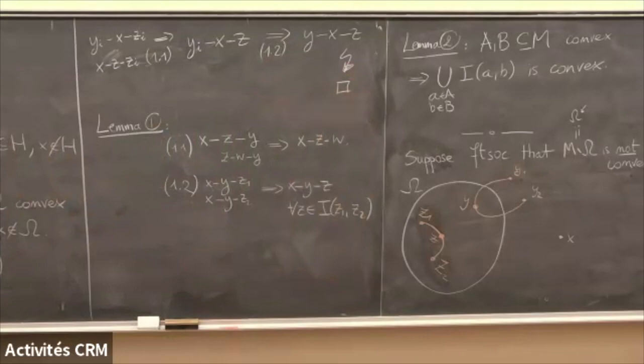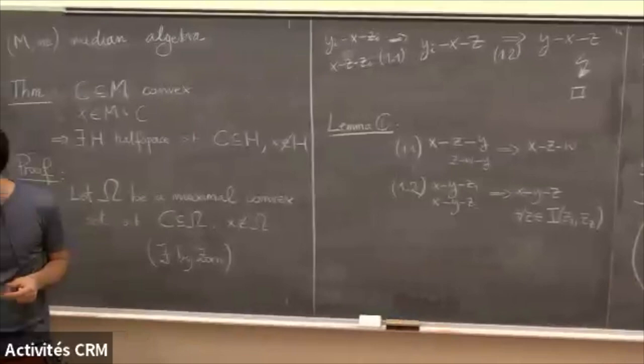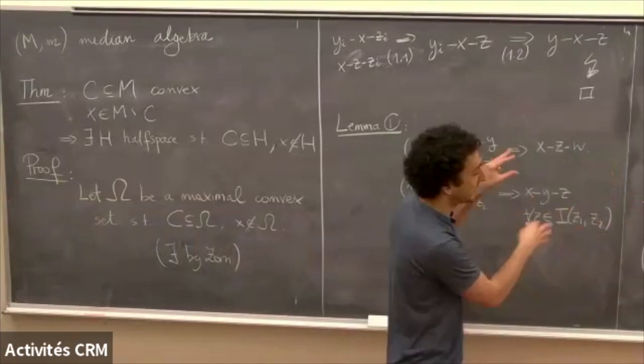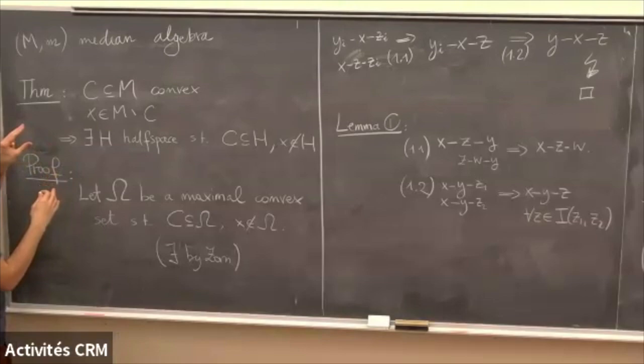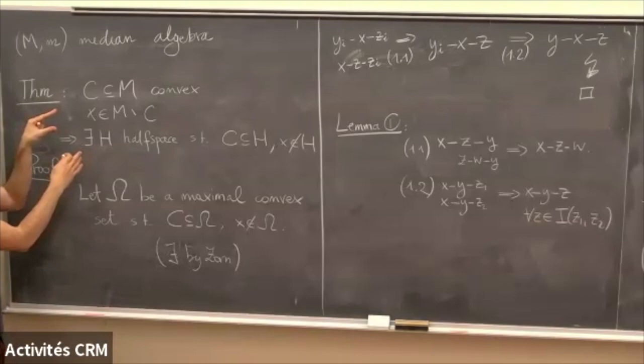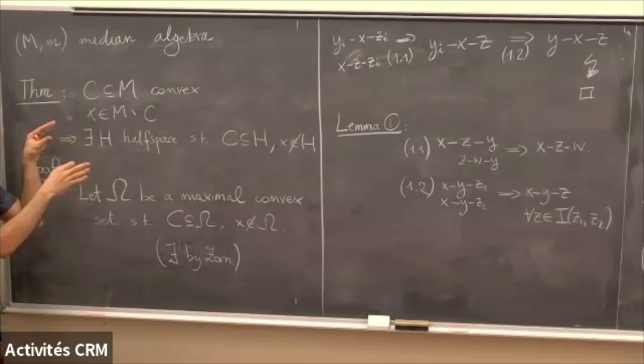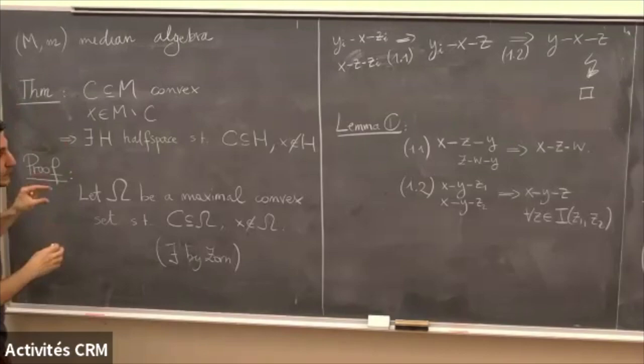So the theorem is proved. The point is that you need all these identities and this work to get to this theorem, but once you have it you never need to use the identities in the definition of median algebra again. Just from the fact that points are separated by half spaces, it is almost immediate to deduce all the identities — this theorem encodes all the power of those identities.